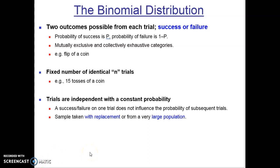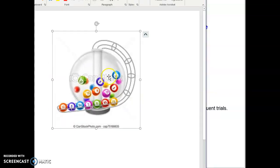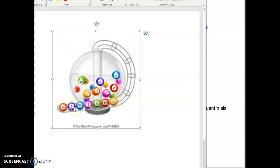Continuing on from the last video, we were talking about the requirements for the binomial distribution. One of those requirements is that the trials be independent with a constant probability. An example I gave you was with these lottery balls. One way to ensure that you have constant probabilities on each trial is when one of these balls comes out, just put it back in before the next ball comes out.